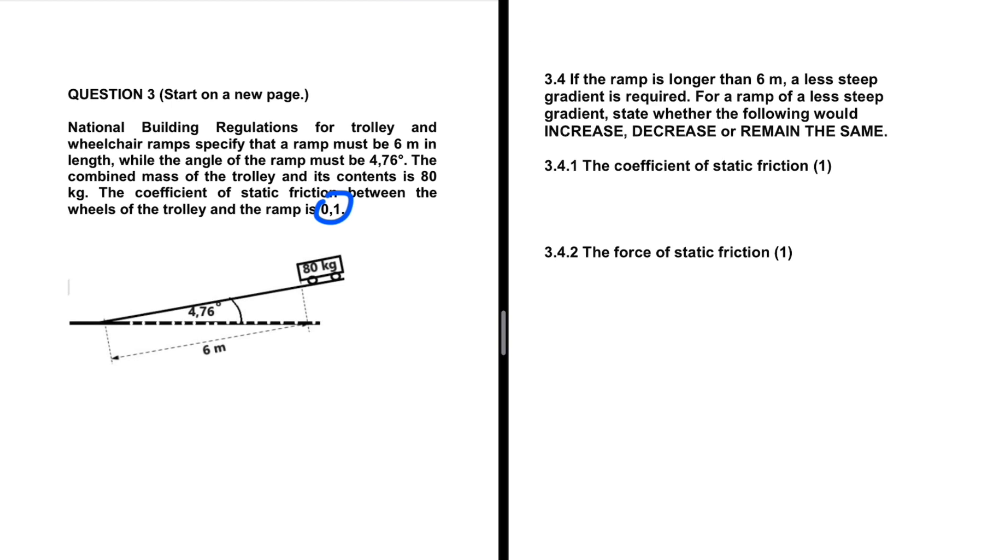If the ramp is longer than 6 meters, a less steep gradient is required. For a ramp of a less steep gradient, state whether the following would increase, decrease, or remain the same. If it is less steep, our angle, this 4.76, it decreases if our ramp is to be less steep. So we are saying what will happen to the coefficient of static friction and the force of static friction. If theta decreases, you need to understand what the consequence of a less steep gradient will imply. Theta decreases.